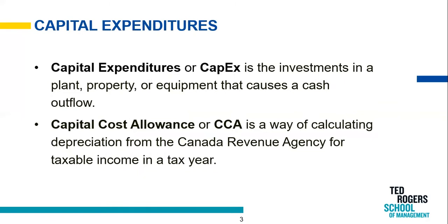Capital Expenditures, or CapEx, is the investment in a plant, property, or equipment that causes a cash outflow. Capital Cost Allowance, or CCA, is a way of calculating depreciation from the Canada Revenue Agency for taxable income. In simple terms, you can think of CCA as a depreciation expense on the income statement for taxable purposes.